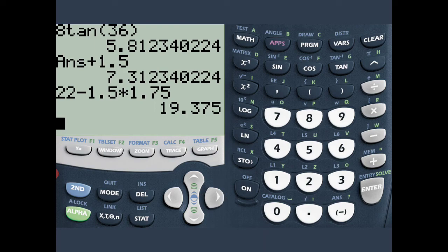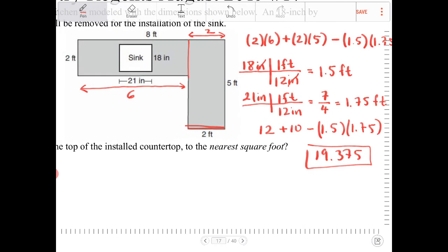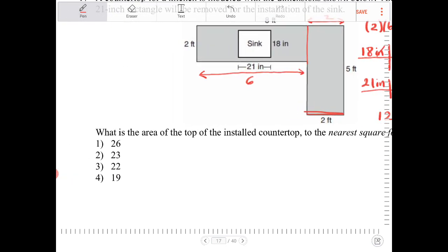I'm going to end up with 19.375. So this is 19.375. And it says to round to the nearest square foot. So that would be 19 then. And that would be option 4.